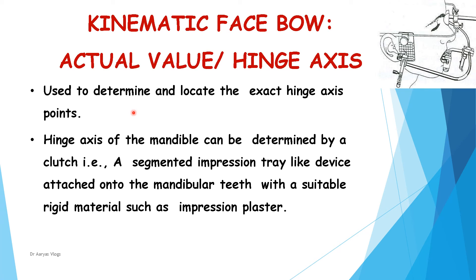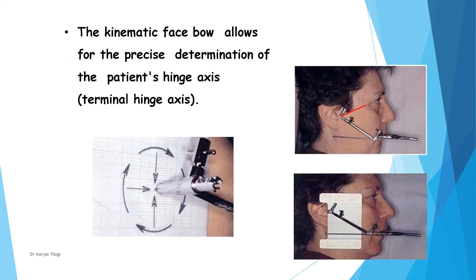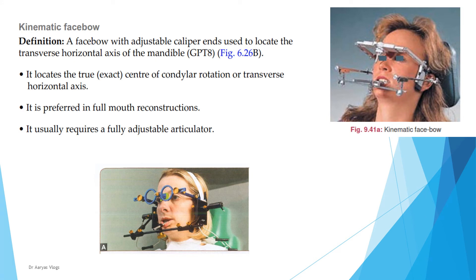The hinge axis of the mandible can be determined by a clutch — a segmented impression tray-like device attached onto the mandibular teeth with a suitable rigid material such as impression plaster. The kinematic facebow allows precise determination of the patient's hinge axis. It is a facebow with adjustable caliper ends used to locate the transverse horizontal axis of the mandible. It locates the true or exact center of condylar rotation. It is preferred in full mouth reconstructions and usually requires a fully adjustable articulator. Pantographic traces are inbuilt with this kinematic facebow.